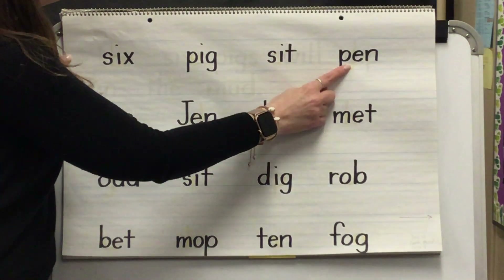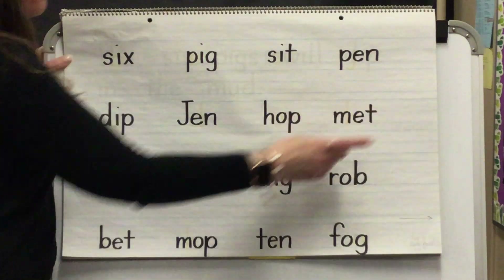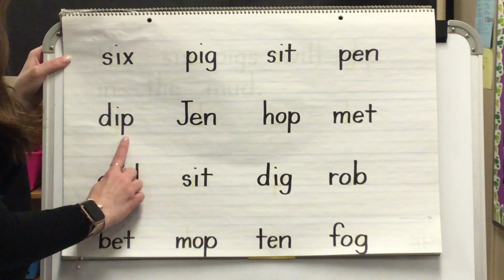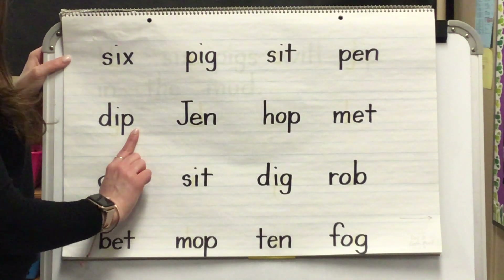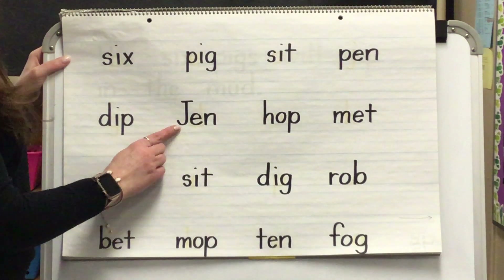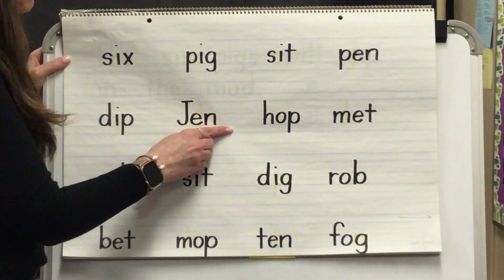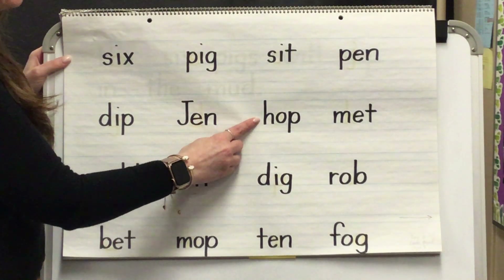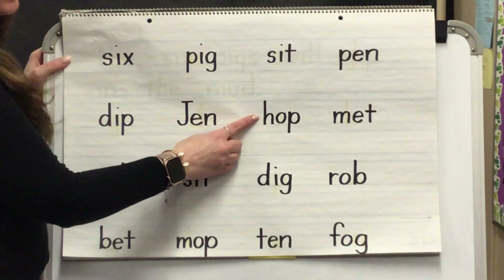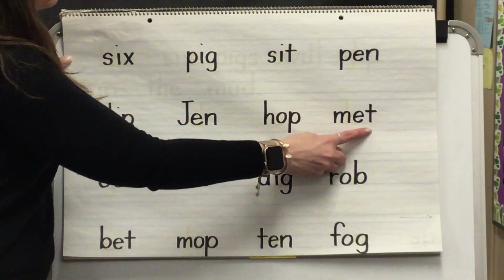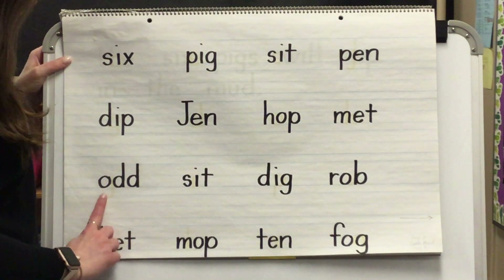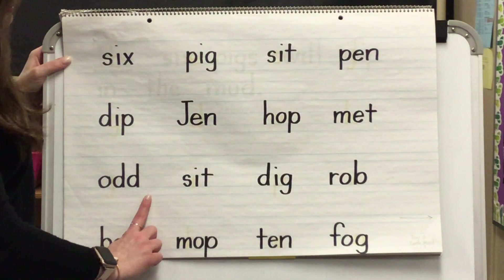Pen. Word. Yes, pen. Blend. Word. Yes, dip. Blend. This is a name. Word. Yes, gen. Blend. Word. Yes, hop. Blend. Word. Yes, met. Blend. Word. Yes, odd.